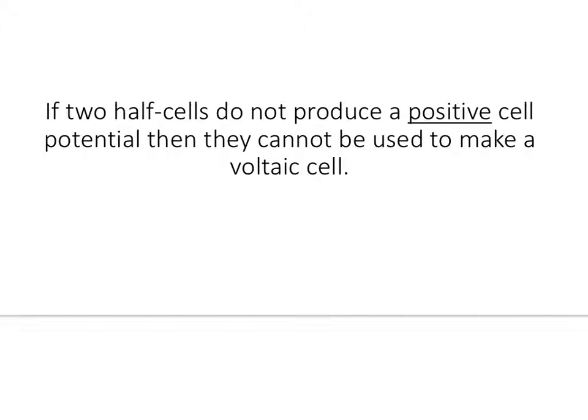Finally, if two half cells do not produce a positive cell potential, they cannot be used to make a voltaic cell. Well, think about it. Voltaic cells are when you set things up and it kind of goes on its own. It's meant to generate electricity. However, if something's not spontaneous, that means you have to give it energy to make it work, which means it doesn't produce its own. So, it has to be spontaneous to make a voltaic cell, which means our cell potential has to be positive. So, just kind of keep that in mind. Again, relating things. There you go.